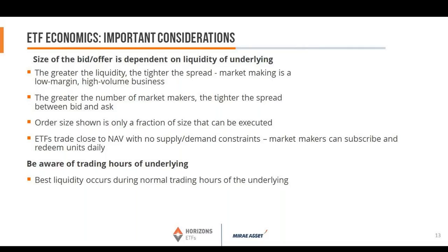The order size shown on your screen is actually only a fraction of what can be executed. On the TSX 60, we may show 100,000 units on the bid-ask, but because of the liquidity of the index there could be hundreds of thousands more shares available at that same bid-ask price. The size shown on screen could be far less than what can actually be transacted. Also, ETFs typically trade very close to NAV with no supply-demand constraints, as market makers can subscribe and redeem units daily — which is really important.